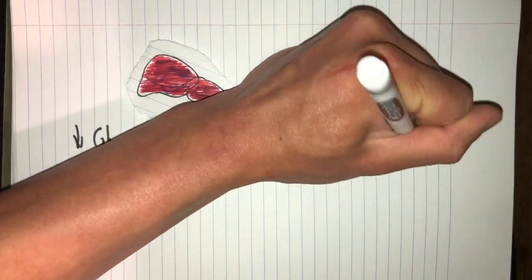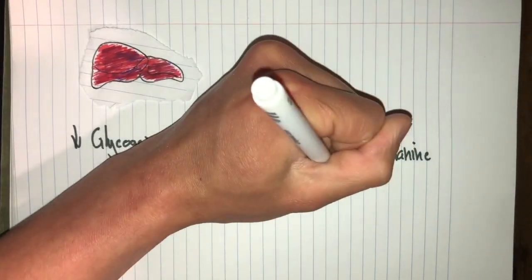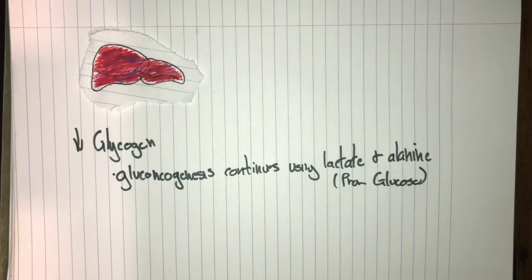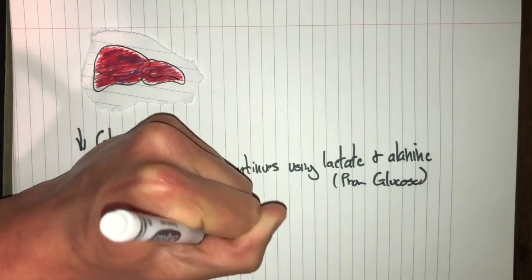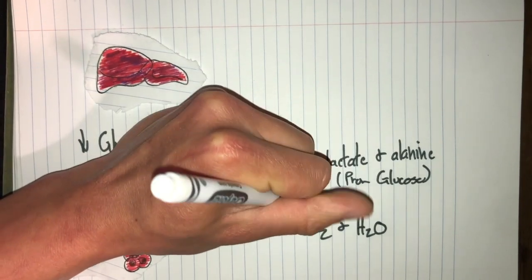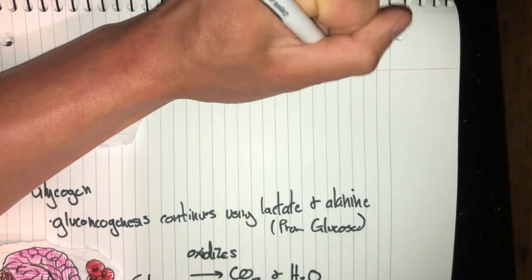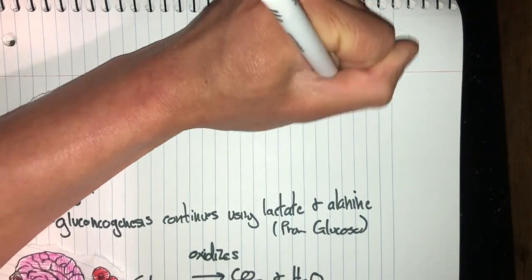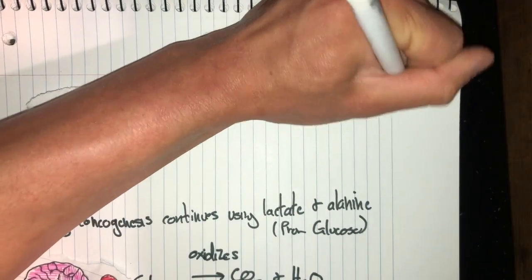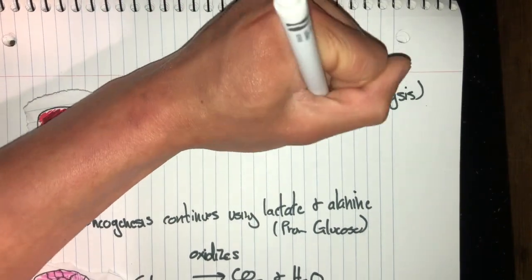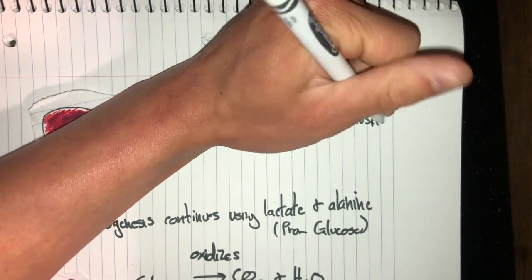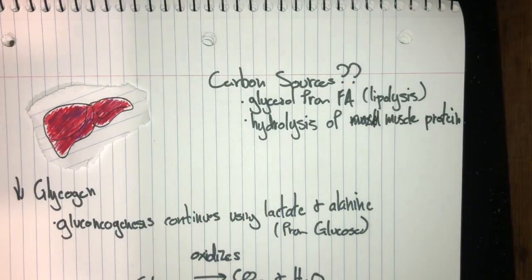All right, so talking about the liver: when the glycogen stores in the liver are depleted, gluconeogenesis uses lactate and alanine. This is of course from glucose that's already been broken apart. So the brain fully oxidizes glucose to CO2 and water, so we need other carbon sources. One of these is found in glycerol from adipose tissue during lipolysis, another from the hydrolysis of muscle proteins, which is very scary and can lead to serious problems.